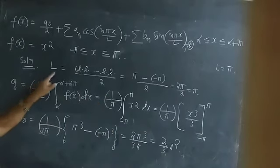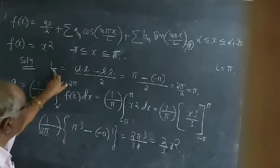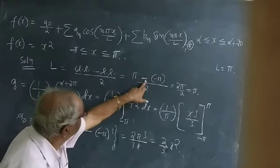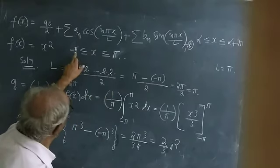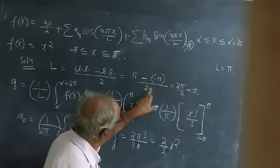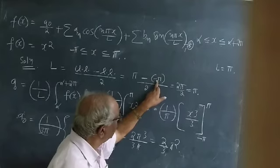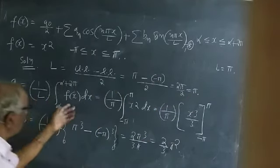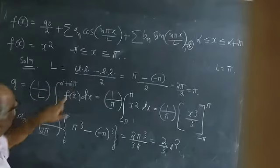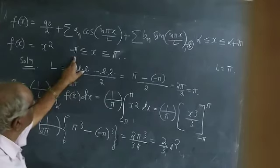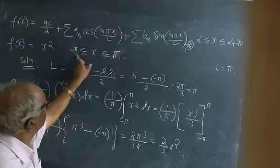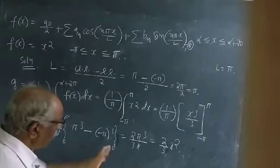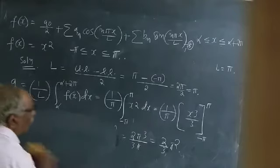Very important point — all students tend to make mistakes while finding l. The value of a₀ uses upper limit minus lower limit: π minus (-π) divided by 2 equals π. So l = π. Just substituting the formula: alpha to alpha+2l means using the given interval in the problem, which is minus π to plus π. That is what we are writing here.